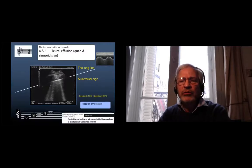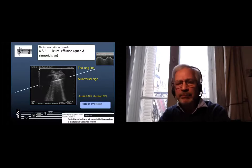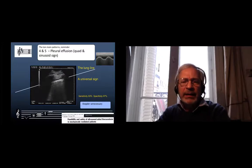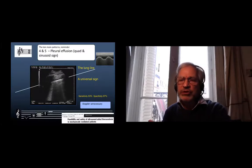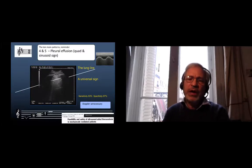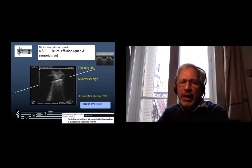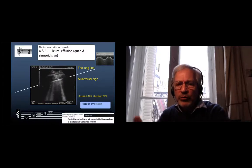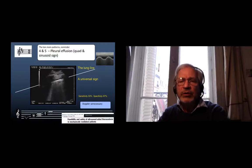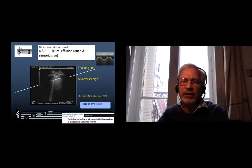Which shows the quad sign mainly. That is, we see one line which is bright which is not the pleural line but the lung line, which is parallel to the pleural line and moves toward the pleural line on inspiration, making the sinusoid sign. No need for Doppler.